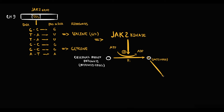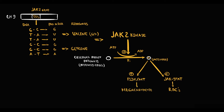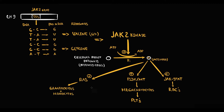By activation of the JAK-STAT pathway, JAK2 kinase stimulates mostly red blood cell production. By activation of the PI3K-AKT pathway, it stimulates the production of megakaryocytes, from which platelets are formed. By activation of the RAS pathway, it stimulates the production of granulocytes and monocytes.